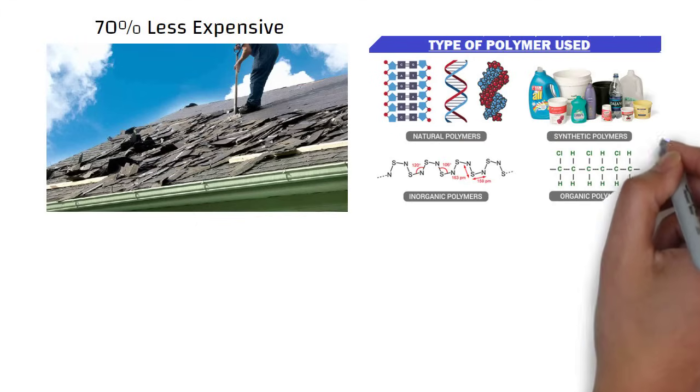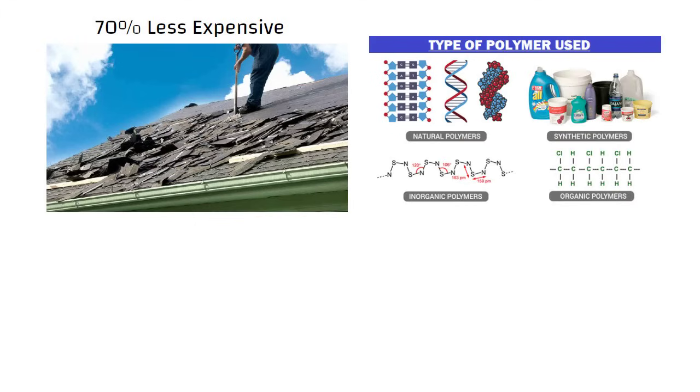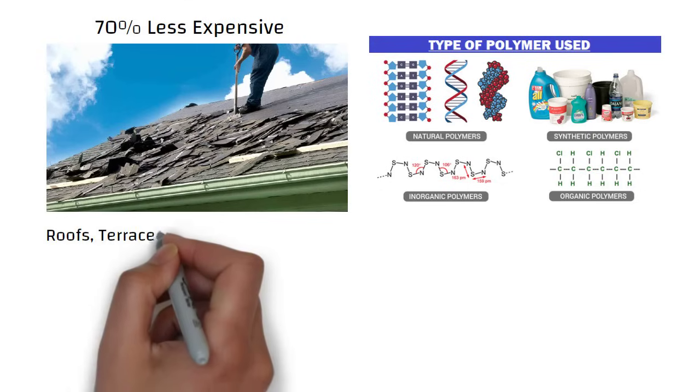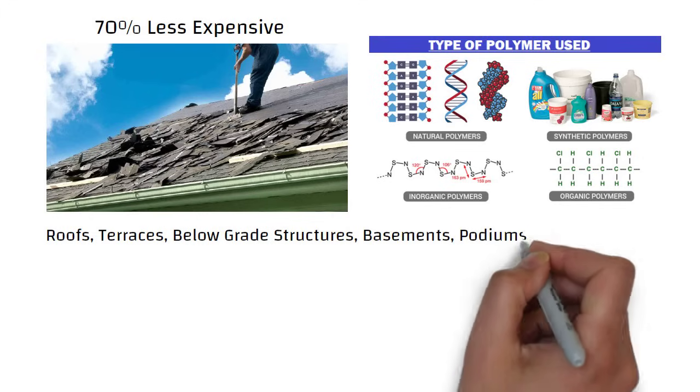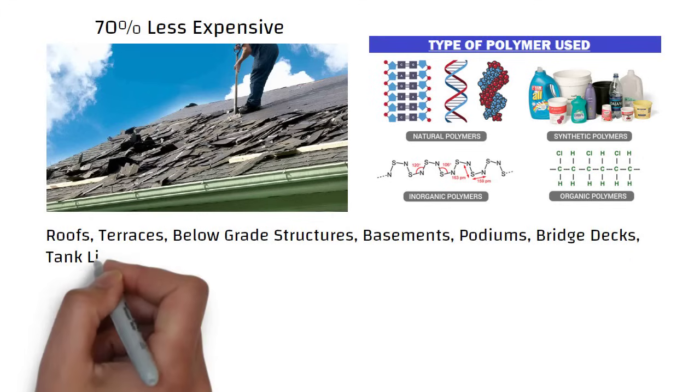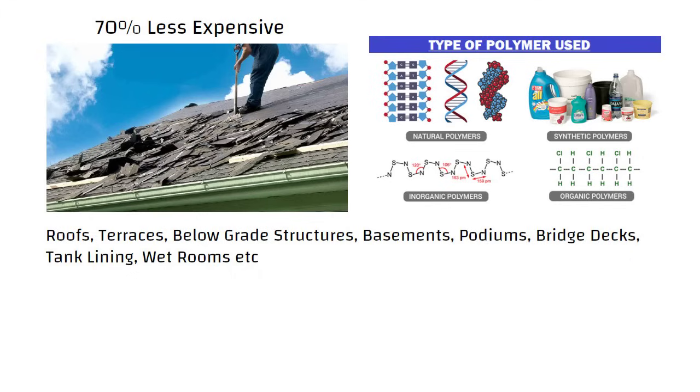The durability of waterproofing depends on type of polymer used for making of the liquid waterproofing. It can be used on roofs, terraces, below-grade structures, basements, podiums, bridge decks, tank lining, wet rooms, etc.